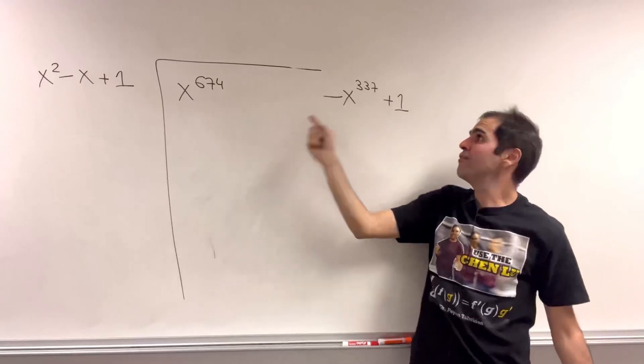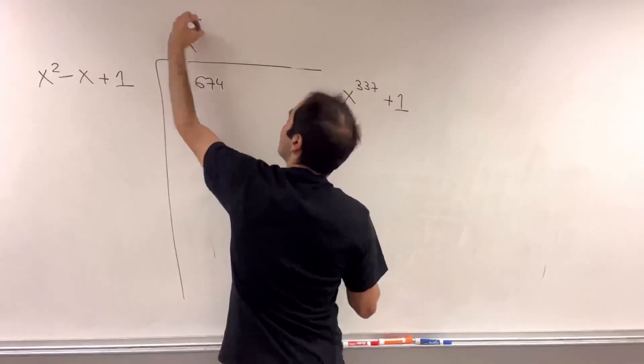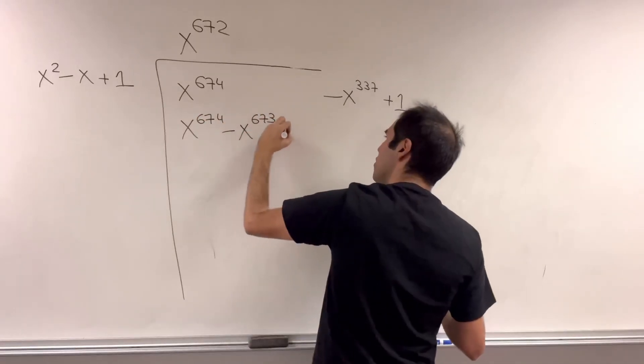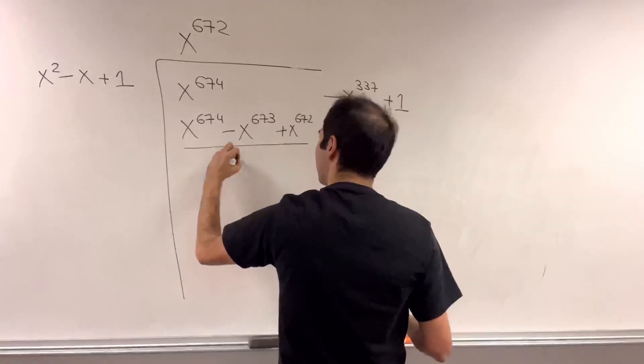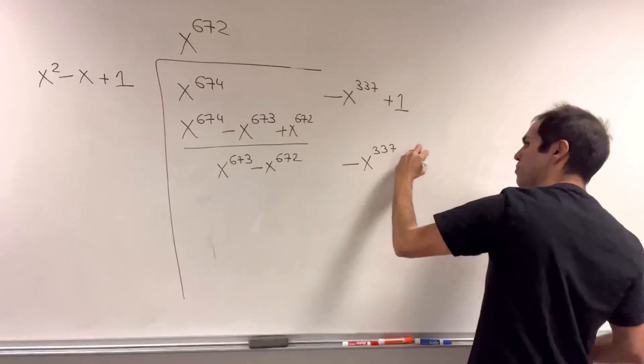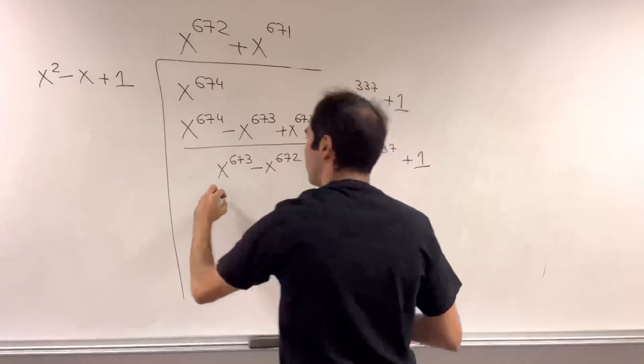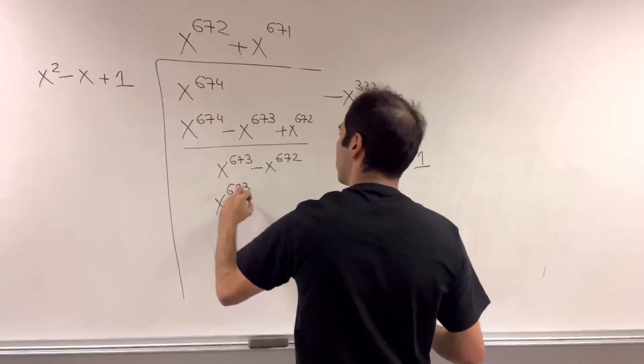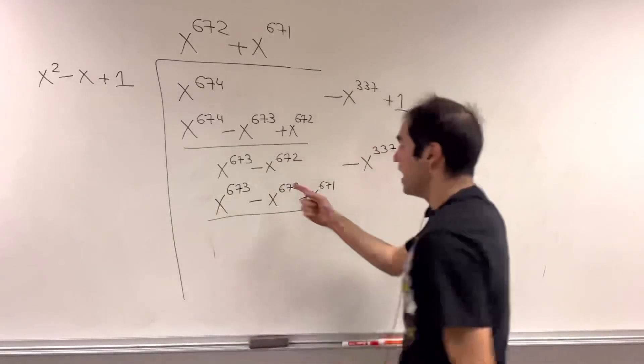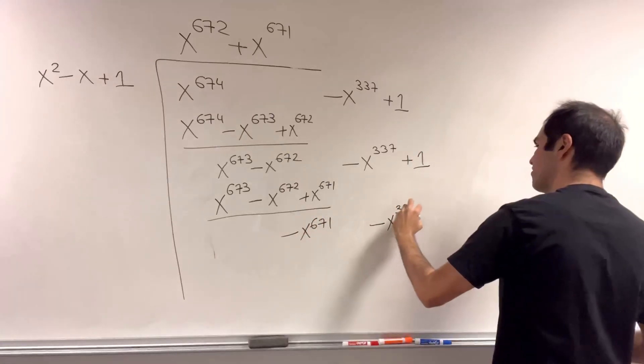So let's try to divide x to the 674 minus x to the 337 plus 1 by x squared minus x plus 1. Well, first of all, we have x to the 672, because if you multiply here, we get x to the 674 minus x to the 673 plus x to the 672. And this gives you x to the 673 minus x to the 672. And again, this juncture minus x to the 337 plus 1, well, I notice this does have the same sign. So it's OK to do plus x to the 671, and then you get x to the 673 minus x to the 672 plus x to the 671.